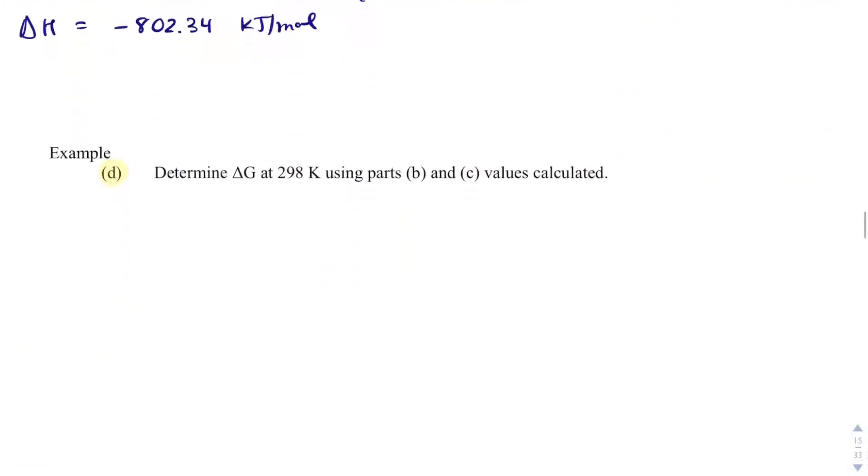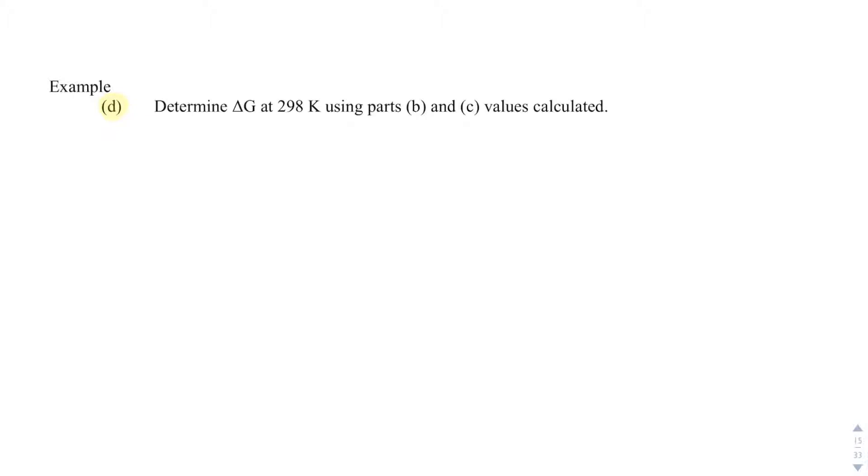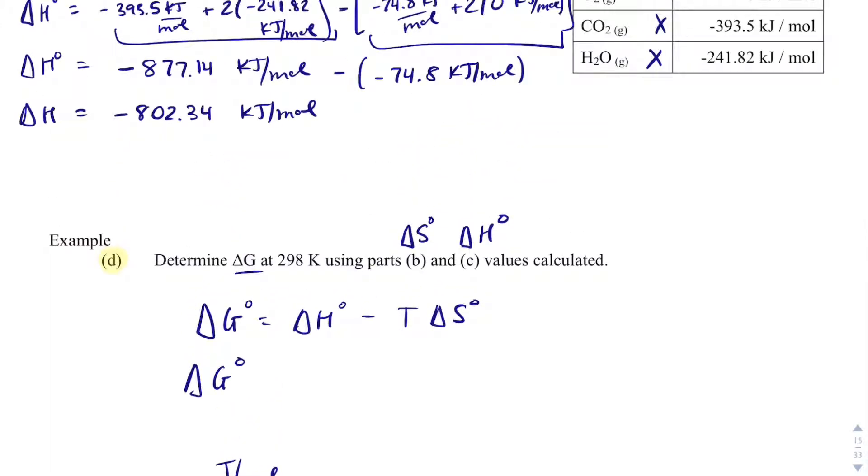Now, the last problem is kind of interesting. We've just gotten in part B, we got delta S. In part C, we got delta H. And I want to get the delta G value. So delta G equals delta H minus T delta S. And I'm solving for delta G. Delta G is always in joules per mole. So what that means is I need to convert this. This is negative 802.340 kilojoules per mole.